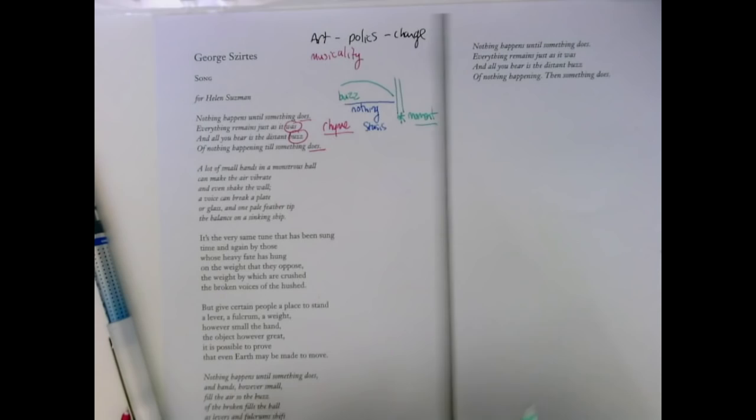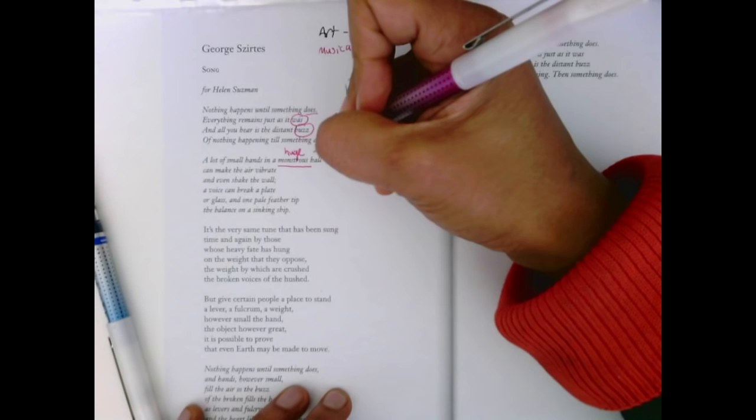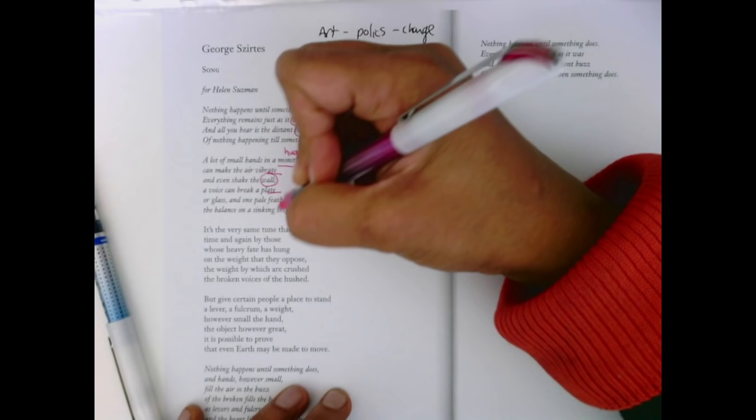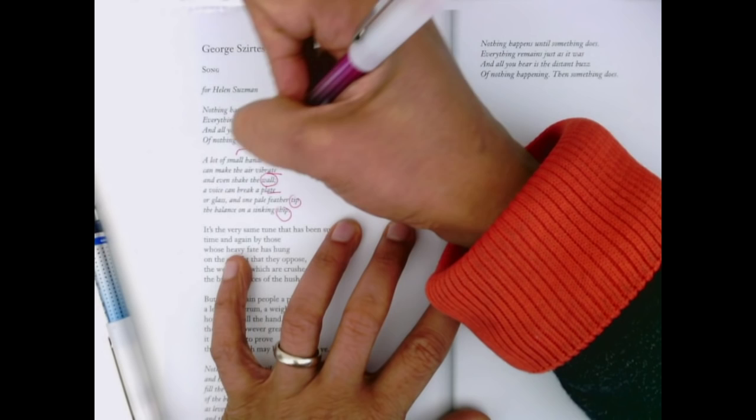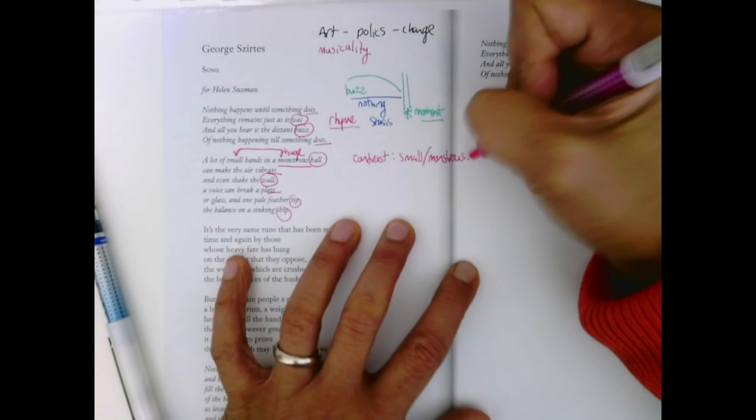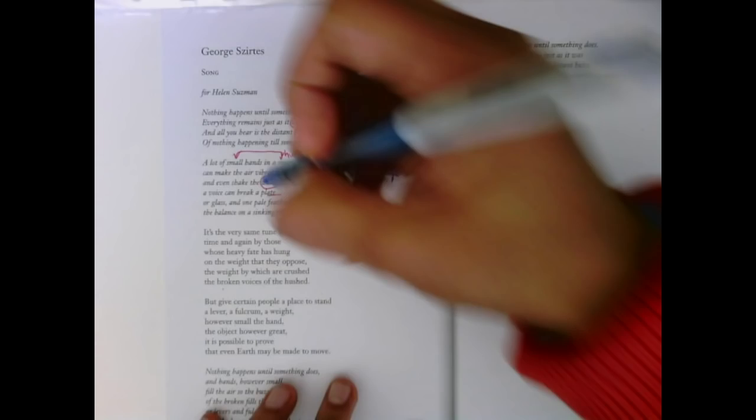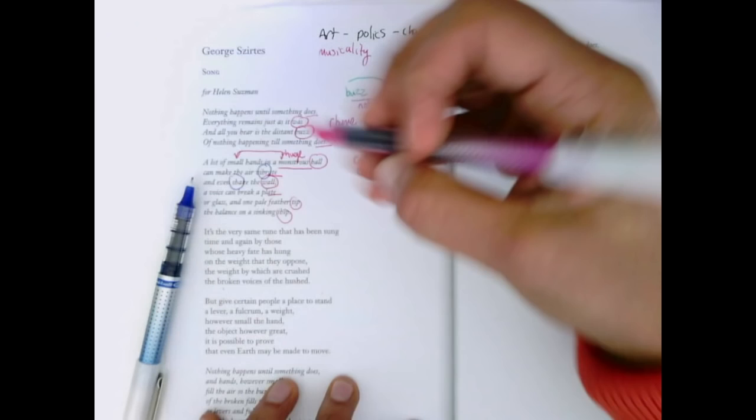Here's some examples of that. A lot of small hands in a monstrous, huge hall can make the air vibrate and even shake the wall. We still get this rhyme: vibrate, plate, tip, ship. Small hands, contrast small with monstrous, and what happens is when all these hands work together, they clap together, they fill, and they actually make the wall shake and vibrate.